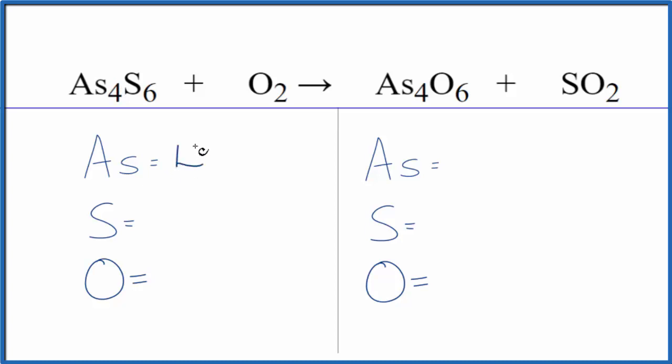...of these arsenic atoms, six sulfurs, two oxygens. Product side we have four arsenics, we have one sulfur, and then six oxygens. But be careful because we have two more here, we have to add those, eight total oxygen atoms.